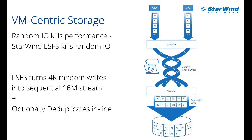Starwind developed a log-structured file system that doesn't use any proprietary parts in the server. Instead, it uses local RAM and local spindles to accelerate random writes and eliminate IO blender. When multiple virtual machines in your production environment generate large amounts of random writes, Starwind coalesces them into 16 megabyte chunks and then writes them to the underlying storage sequentially.